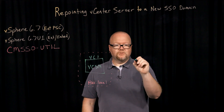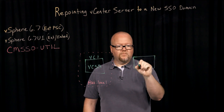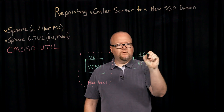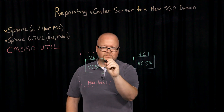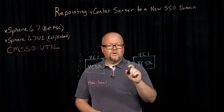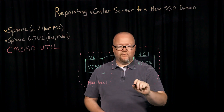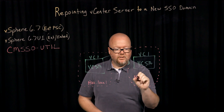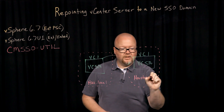So what that looks like is we have our same vCenter server, VC1. When we repoint into this new domain, we're able to create a new domain name during that repoint function. And this time we're actually going to name it properly: HOUSTON.local.